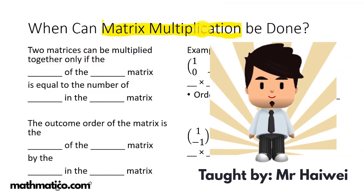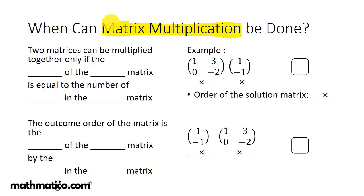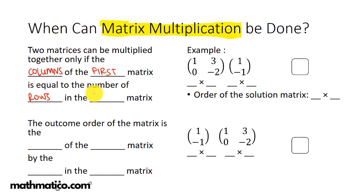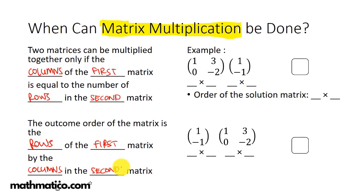Matrix multiplication is not always possible. Two matrices can be multiplied together only if the number of columns of the first matrix is equal to the number of rows of the second matrix. The order of the resulting matrix is the rows of the first matrix by the columns of the second matrix.